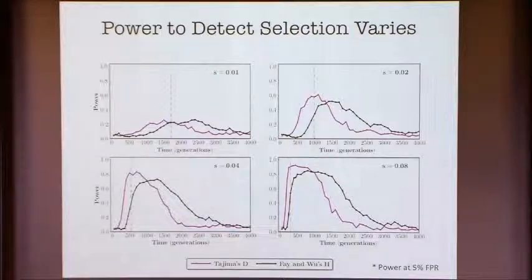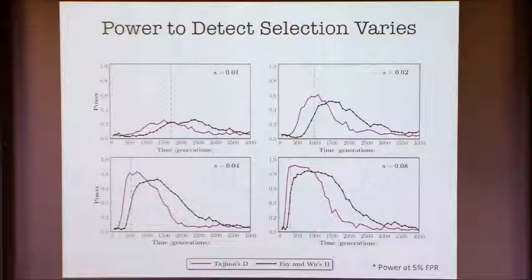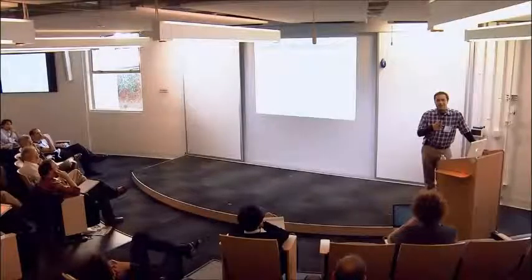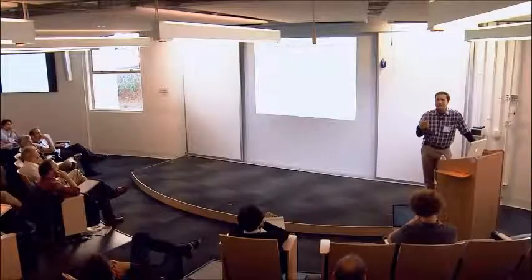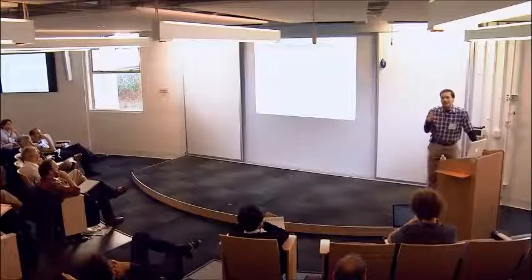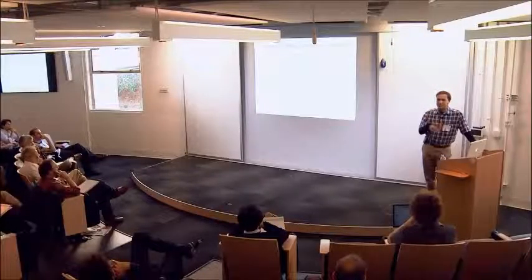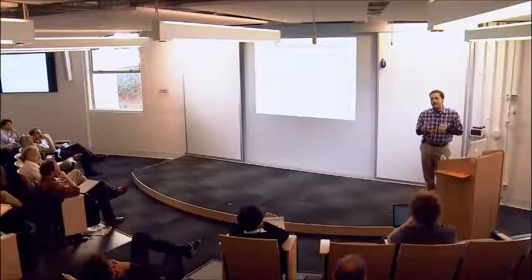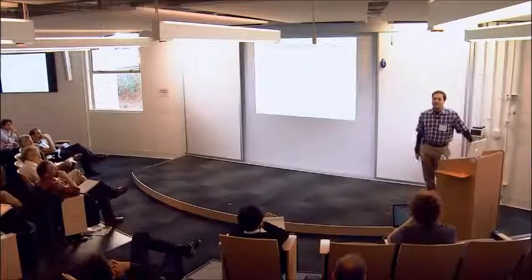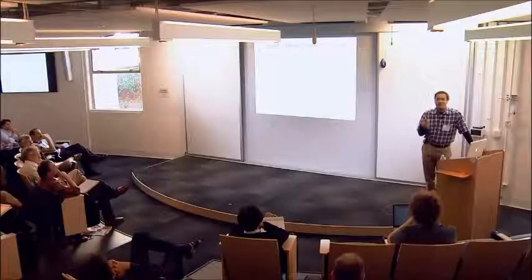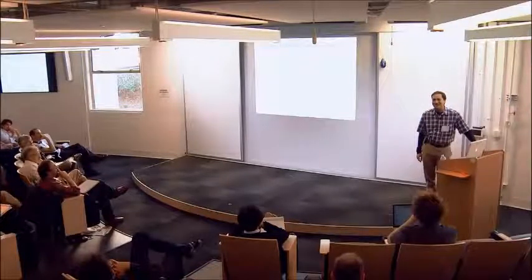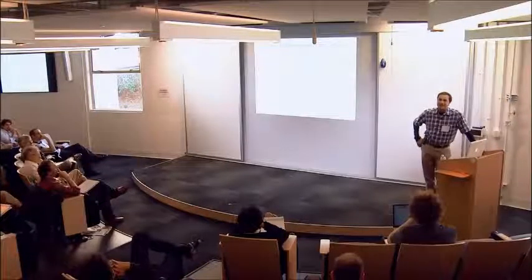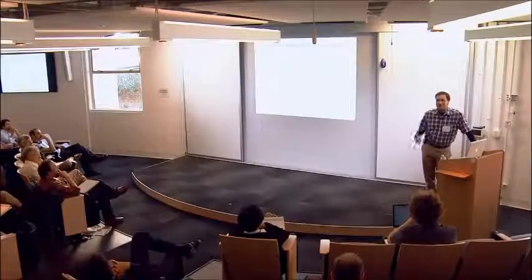A question arose about what amount of recombination and what window sizes were used. We use a standard trick in forward simulation: rather than taking N as 10,000, we take N as 1,000 and scale the mutation and recombination rates accordingly. We chose numbers that are standard in the literature, though I don't remember the exact values offhand.